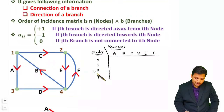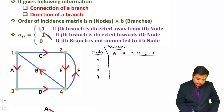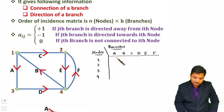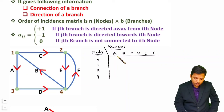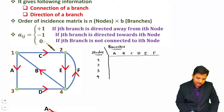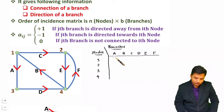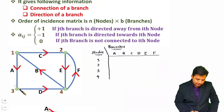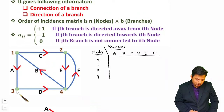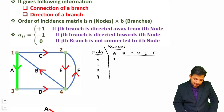We form the incident matrix per nodes with respect to branches. Write +1 when a branch is emerging from a node, -1 when a branch is incoming to a node, and 0 when not connected. For branch A, it is connected between nodes 1 and 3, emerging from node 1. So node 1 gets +1 and node 3 gets -1. Nodes 2 and 4 are not connected with branch A, so they get 0.